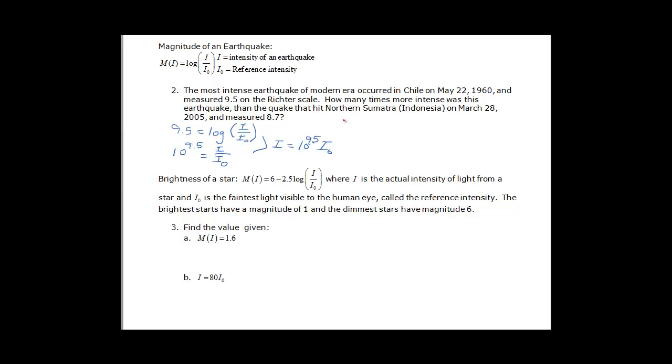And then if I do the other one, I would have 8.7 is equal to log of i over i0. So 10 to the 8.7 is equal to i over i0. When we clear the fraction, we have 10 to the 8.7 i0 is equal to i. Now we want to know the Chile one compared to the northern Sumatra one. So we make that ratio: 10 to the 9.5 i0 over 10 to the 8.7 i0. The i0s cancel. When we subtract our exponents, we get 10 to the 0.8, which is equal to 6.3.